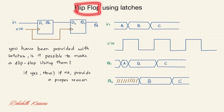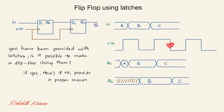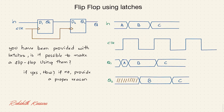Coming to a flip-flop, it only propagates data at the edge. If it propagates at the rising edge it is called rising edge-triggered; if at the falling edge it is called falling edge-triggered. This is the basic difference between a latch and a flip-flop. Now, you have been provided with latches and you need to make a flip-flop out of them.